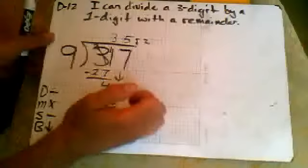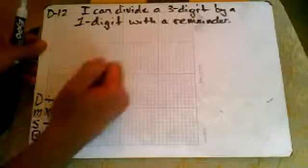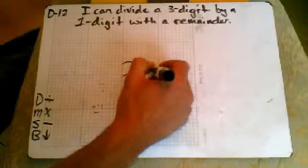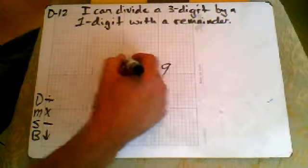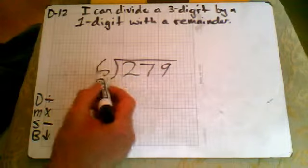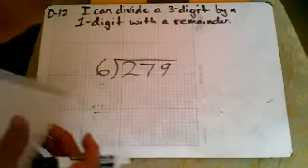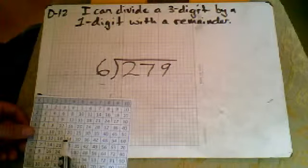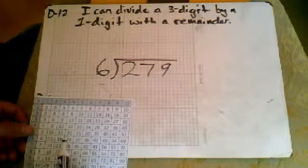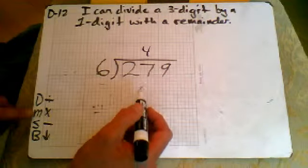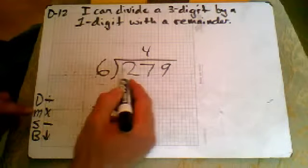Alright, let's do a second problem. We'll do 279 divided by 6. 6 will not go into 2. 6 will go into 27. 6 goes into 30—too big. Let's back it up to 24. 6 goes into 24 four times. I'm going to put a 4 there. Then I'm going to multiply: 4 times 6 is 24.